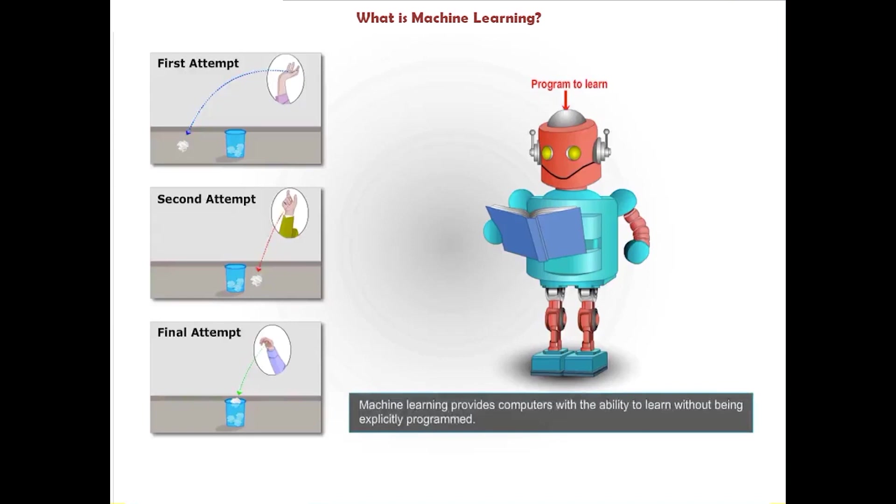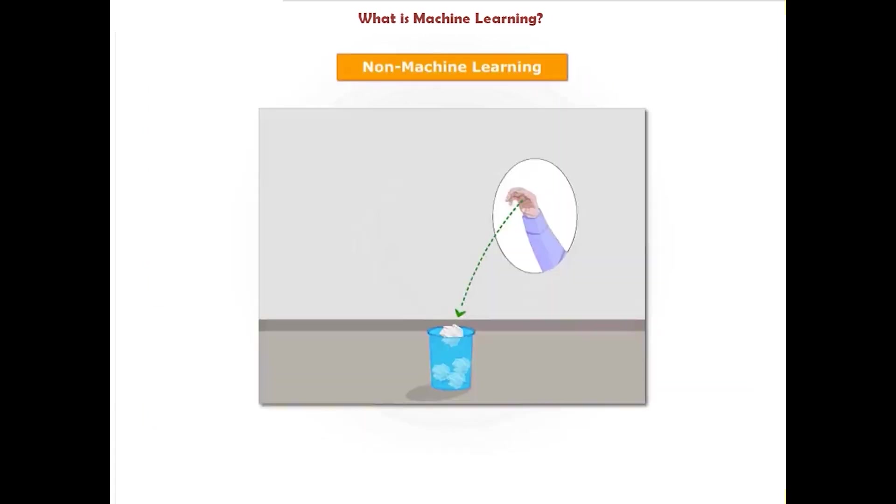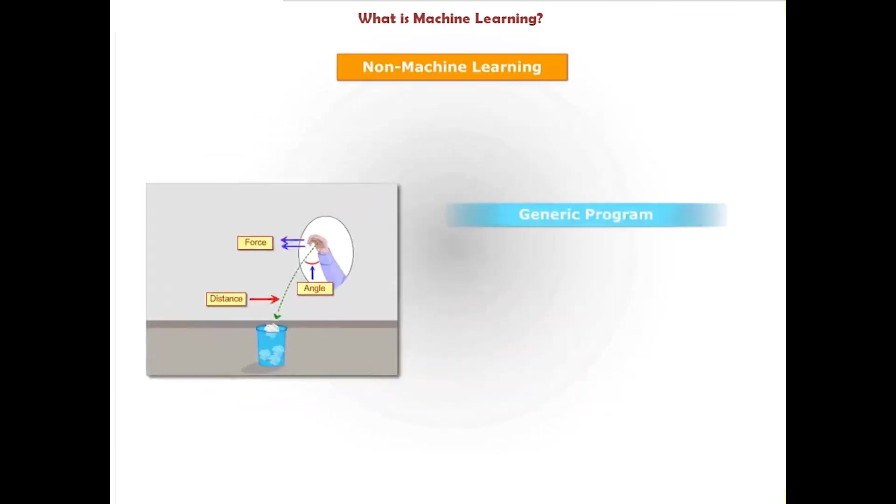Take a look at the paper toss example in the context of non-machine and machine learning approaches, where the computer is supposed to calculate the force required while throwing the paper by taking factors like distance, angle, etc. into consideration. In the example, a generic program tells the computer to measure the distance and angle and applies some predefined formulas to calculate the force required.